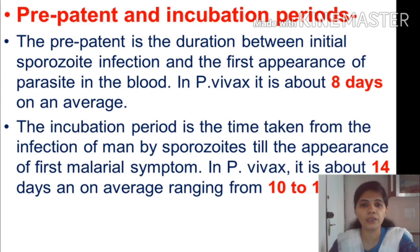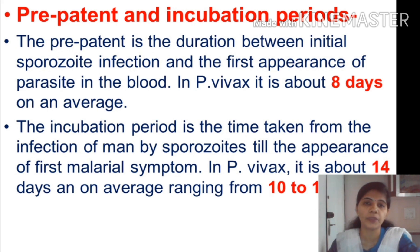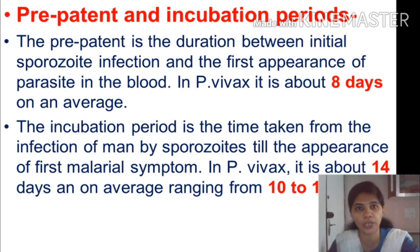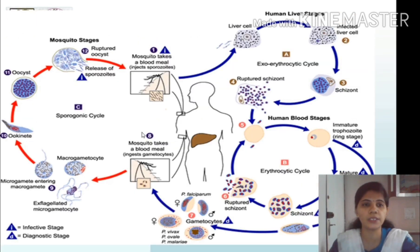The incubation period is the time between the sporozoite entering the body and the first appearance of malarial symptoms. The main diagnostic feature of malaria is a very high-grade fever that repeats every 48 hours, accompanied by severe chills. The time from sporozoite entry to the first malarial symptoms is approximately 14 days, ranging from 10 to 17 days. The pre-patent period for Plasmodium vivax is about 8 days and the incubation period is 14 days on average.